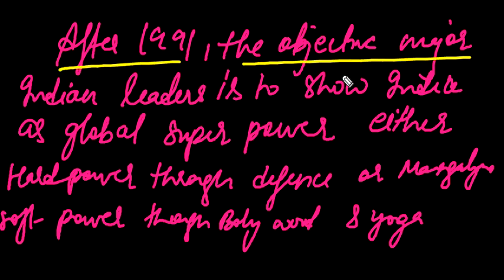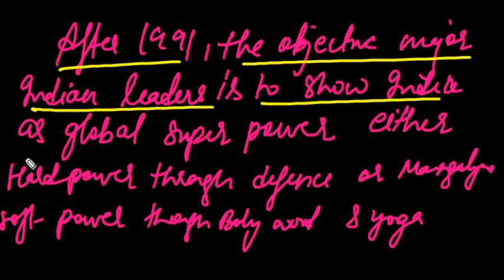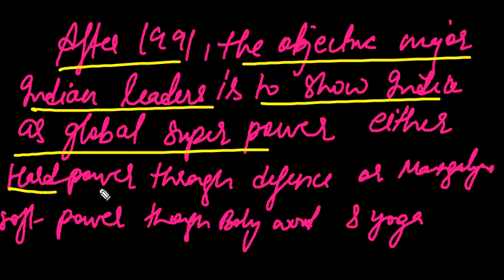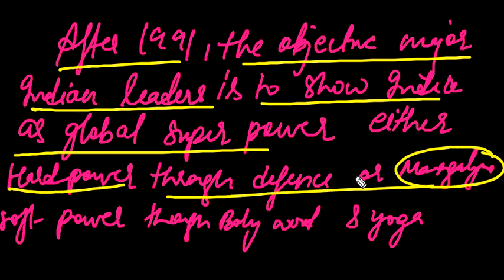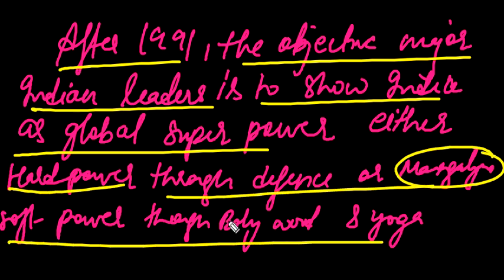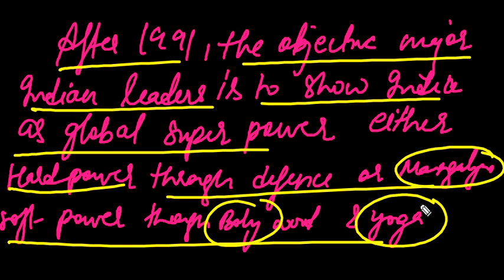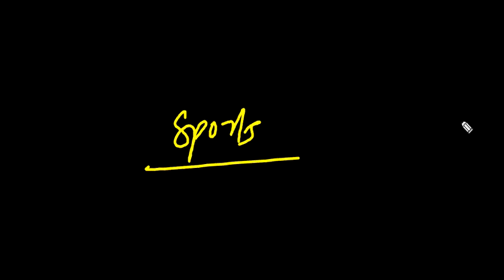After 1991, the objective of major Indian leaders is to show India as a global superpower, either through hard power via defense and military, or soft power with the help of Bollywood or Yoga. But there is one thing that India is lagging behind, and that is in sports.